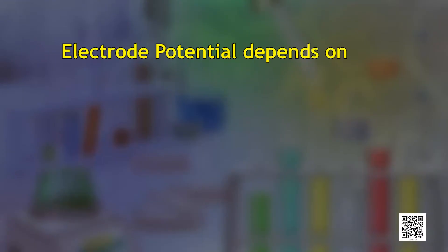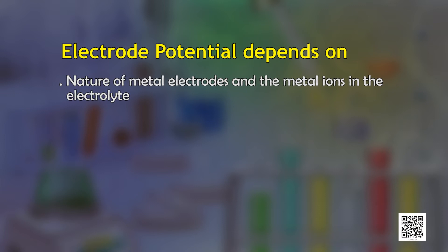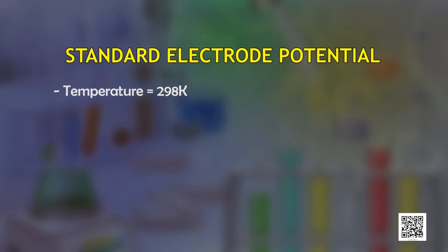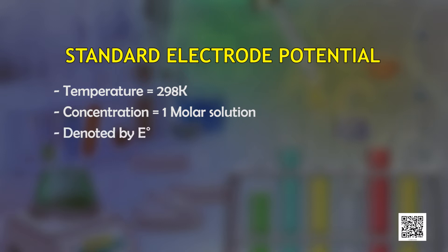Electrode potential depends on the nature of the metal electrode, the metal ions in the electrolyte, the concentration of ions, and the temperature. The electrode potential measured under standard conditions — 298 K and one molar solution — is called standard electrode potential and is denoted by E⁰. For a gaseous electrode, a pressure condition of one atmosphere is considered.